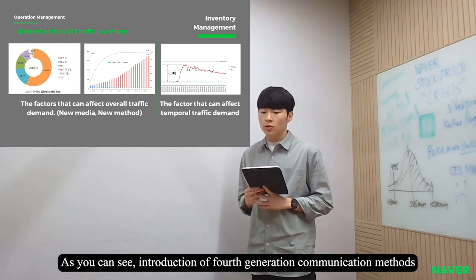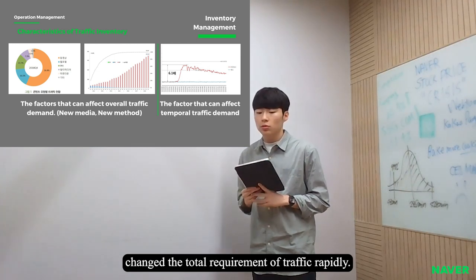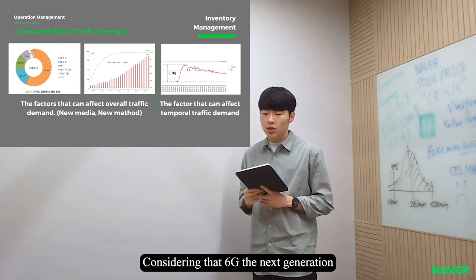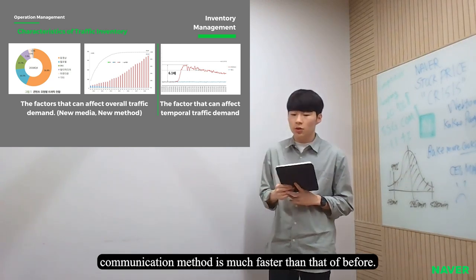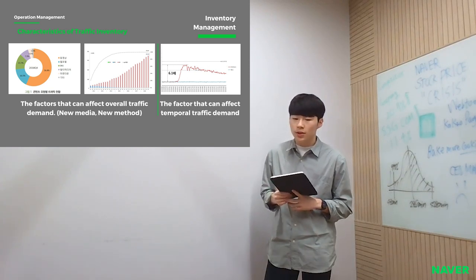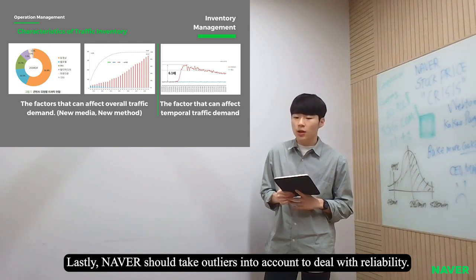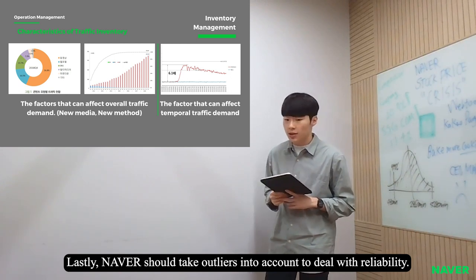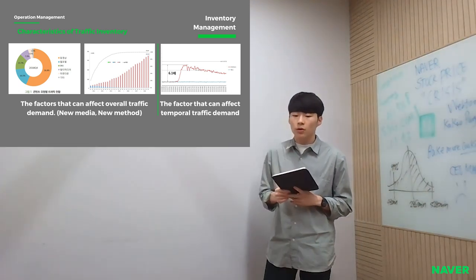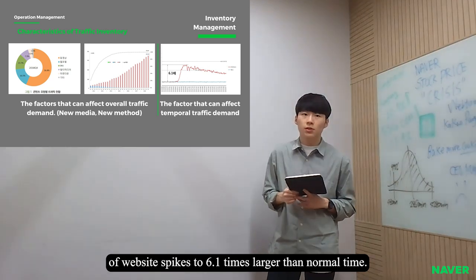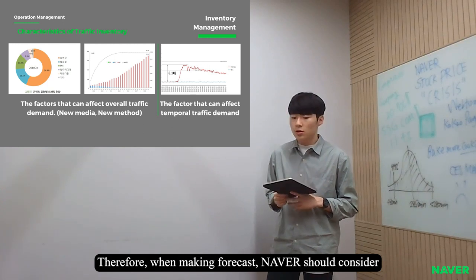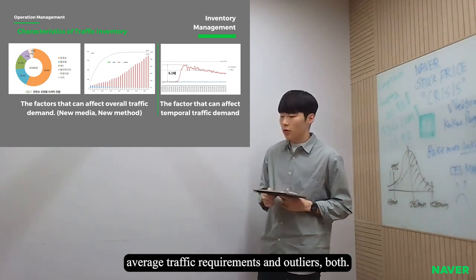As you can see, introduction of fourth generation communication methods changed the total requirement of traffic rapidly. Considering that sixth generation — the next generation communication method — is much faster than before, we can assume that the change in traffic requirements will be enormous. Lastly, Neighbor should take outliers into account to deal with reliability. As you can see in this graph, when an earthquake event occurs, website traffic spikes 6.1 times larger than normal. Therefore, when making forecasts, Neighbor should consider average traffic requirements and allow for outlier spots.